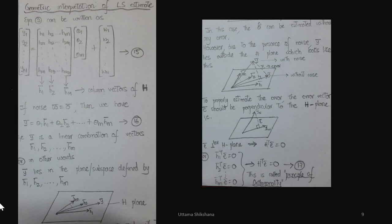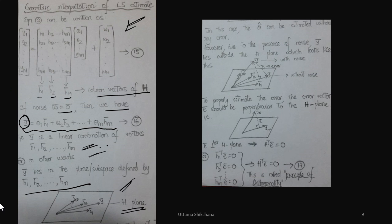Let's look at the geometric interpretation of least squares. In the model, each column H1, H2, up to HM are column vectors of H. If noise is zero, then Y is a linear combination of vectors H1 through HM. In other words, Y-bar lies in the plane defined by H — the H-plane. When Y-bar lies in the same plane as the H-plane, the solution exists. This is the noise-free case.